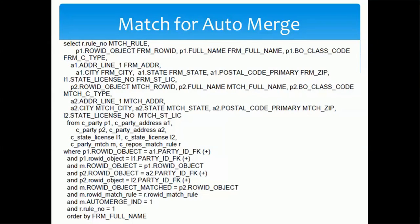Let's see the FROM clause. In the FROM clause, we have c_party aliased as p1, c_party_address as a1, c_party again as p2, and c_party_address as a2. Then we have the identity attributes such as c_state_license as l1 and c_state_license as l2. Then we are referring to metadata tables: c_party_match as m and c_repos_match_rule as r. So we are looking at both business tables and metadata tables. We are taking party address and license as attributes, and match and match rule as repos tables.